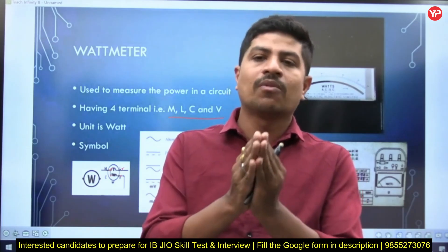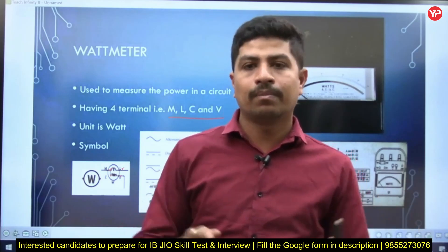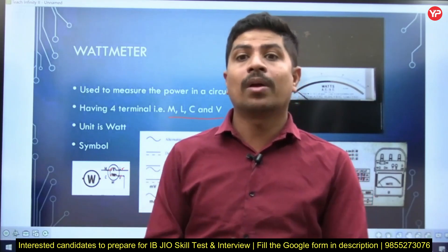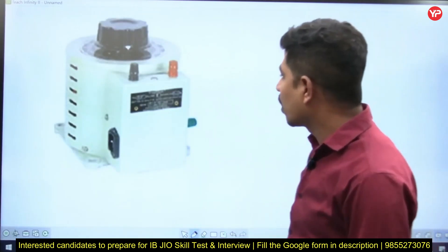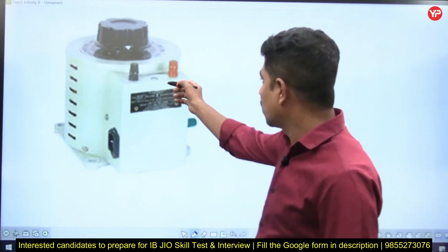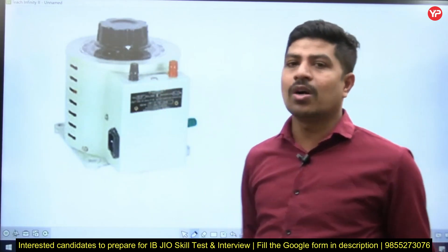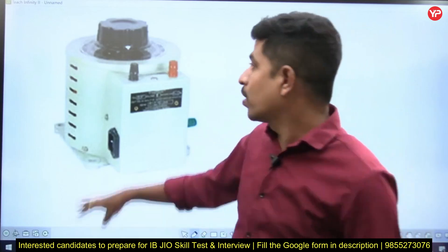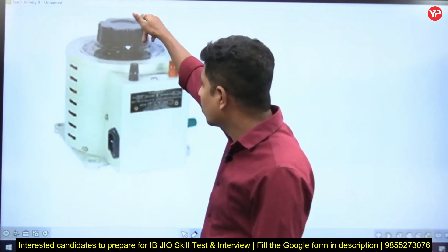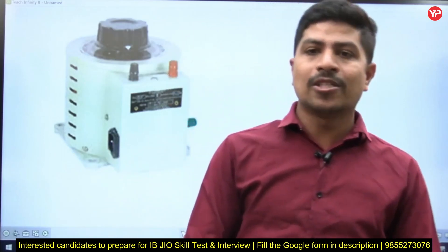Those experiments include verification of all theorems, fluorescent lamp connection, and autotransformer. This is an autotransformer — this is how it looks. There is a knob that rotates, and you vary the voltage according to your requirement. You need to know what the knob does, in what direction to rotate it, and how to make the connections of the autotransformer.